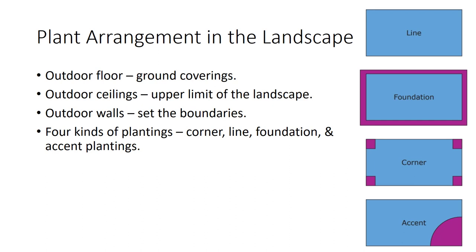Arrangement of plant materials in the outdoor room uses four kinds of plantings. Corner plantings create the frame of the outdoor room. Line plantings create the walls of the outdoor room. Foundation plantings are located along the walls or foundations of buildings, and accent plantings create an area of particular beauty or interest in a landscape. Today, computer graphics can show the final size of plants in a given landscape, which allows the landscape architect to see how the planting will look in 5, 10, or 20 years.